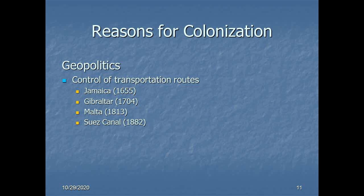If you want an indication of how important this route was, when they were embroiled in the American Revolutionary War, they were also fighting the Spanish who had besieged Gibraltar. The British didn't have enough forces to defend both their American colonies and Gibraltar. So while they tried to hold on to the 13 colonies, they made the long-term strategic decision to prioritize that little chunk of rock guarding the entrance to the Mediterranean, recognizing it was more in their long-term interest than holding on to the colonies that would eventually become the United States.